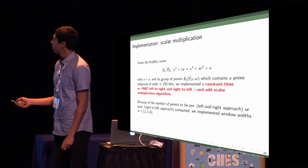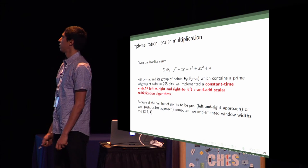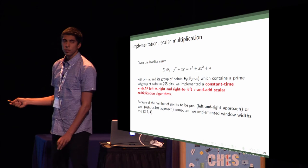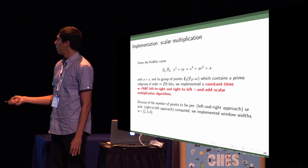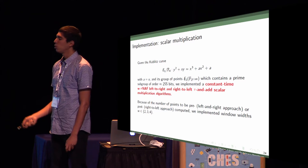We implemented in this curve constant time w-tau-NAF, left-to-right and right-to-left tau-NAF scalar multiplications. Because of the number of points we precompute, we restricted our window width to 2, 3, and 4.